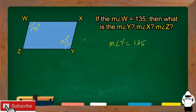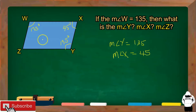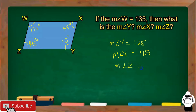How about the measure of angle X? The relationship of angle W and angle X are consecutive angles, and if we add these two angles, the sum is 180 degrees. So, angle W is 135 degrees, meaning angle X is equal to 45 degrees. Angle X is congruent to angle Z because they are opposite angles, so the measure of angle Z is also 45 degrees.